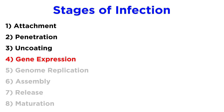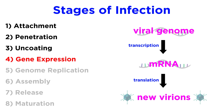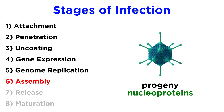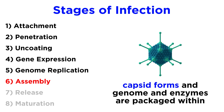The next stage of the infection cycle is gene expression, where transcription, if necessary, and translation of viral mRNA occurs. After gene expression, there will be genome replication, where progeny viral genomes are generated. Next, there is assembly of progeny nucleoproteins. The protein capsid must be formed, and then the genome and any necessary enzymes packaged within it.